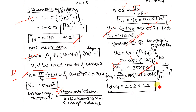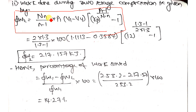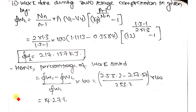For the second part — if compression is carried out in two stages — use the two-stage formula: W = N × (n/(n−1)) × p1 × V1 × (rp^((n−1)/n) − 1), where capital N is the number of stages. Substituting N = 2 and all other previously calculated values gives the two-stage work done = 217.157 kJ.